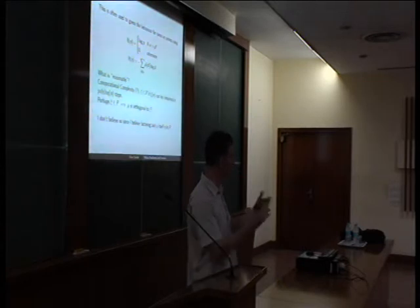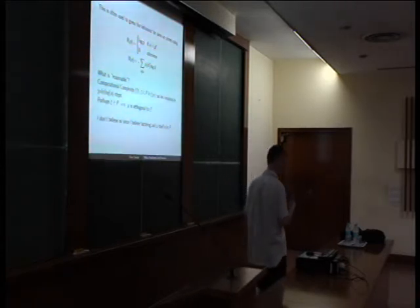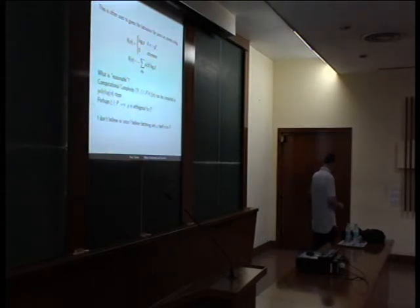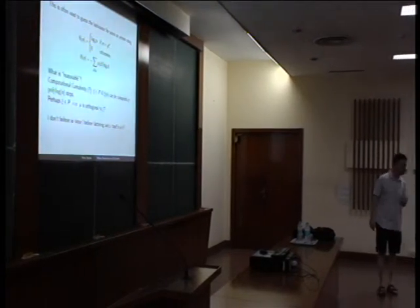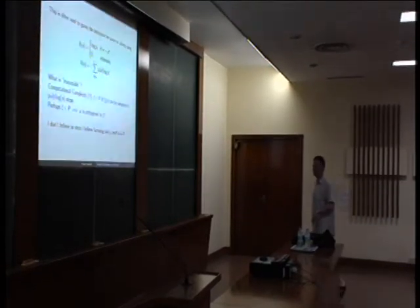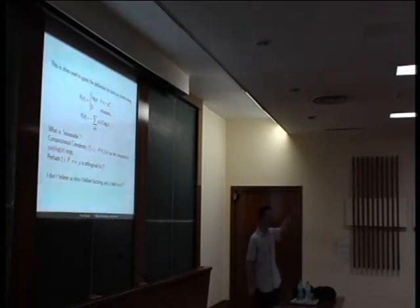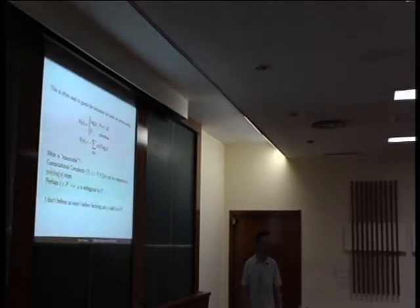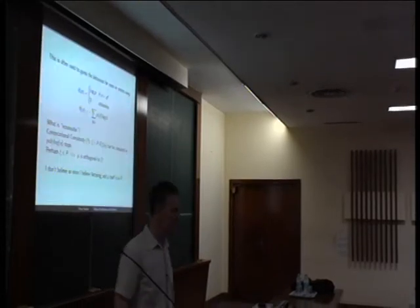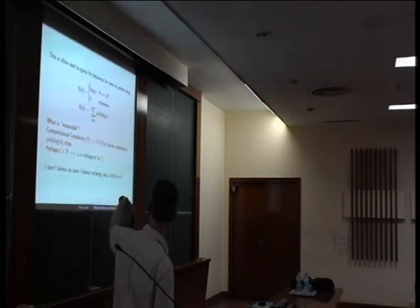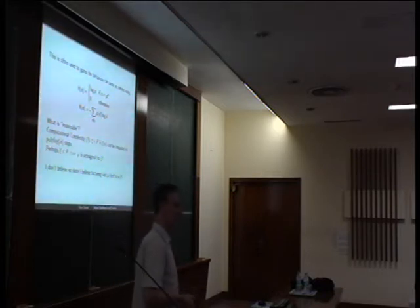Testing primality is in P — that's the great theorem of Agrawal, Kayala, and Saxena, coming from this country. But for factoring, nobody has a good algorithm — maybe the NSA knows how to factor quickly but they won't tell us. There's no theoretical evidence that factoring is hard. I personally think that one day a young person from one of these technology institutes will give us an algorithm to factor quickly. If factoring is easy, then you can compute mu quickly — and then it's certainly not true that mu cancels against any function in P.